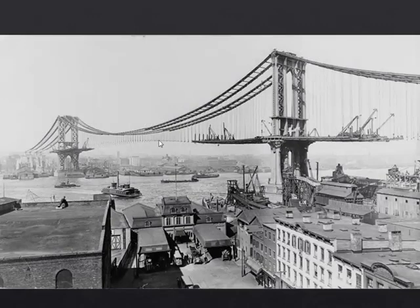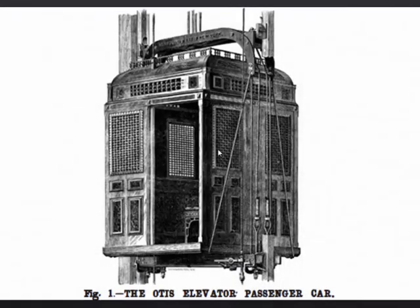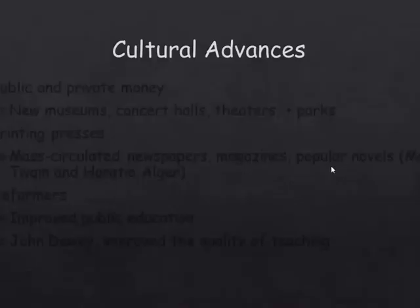This is the Brooklyn Bridge — the first steel suspension bridge, still there today. Go see it and check it out. And there's the elevator. Elijah Otis creates the elevator — people get in, go up floors, go down floors. It had a safety brake on the bottom so that if the cable broke, it wouldn't plummet. That's really nice.